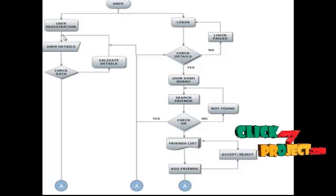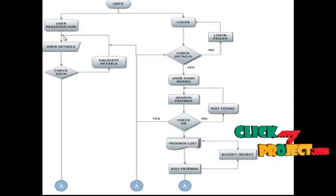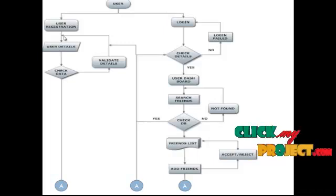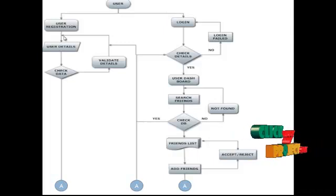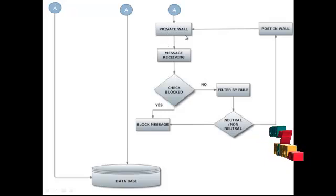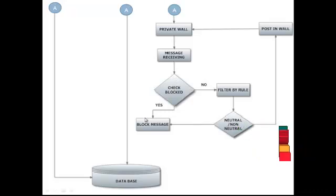Once the message is blocked by the user, that message will not appear in the wall list. If the user allows the message, then it will be posted in the friend list. After receiving the message, it will be checked by the blacklist as well as the filtering rules.